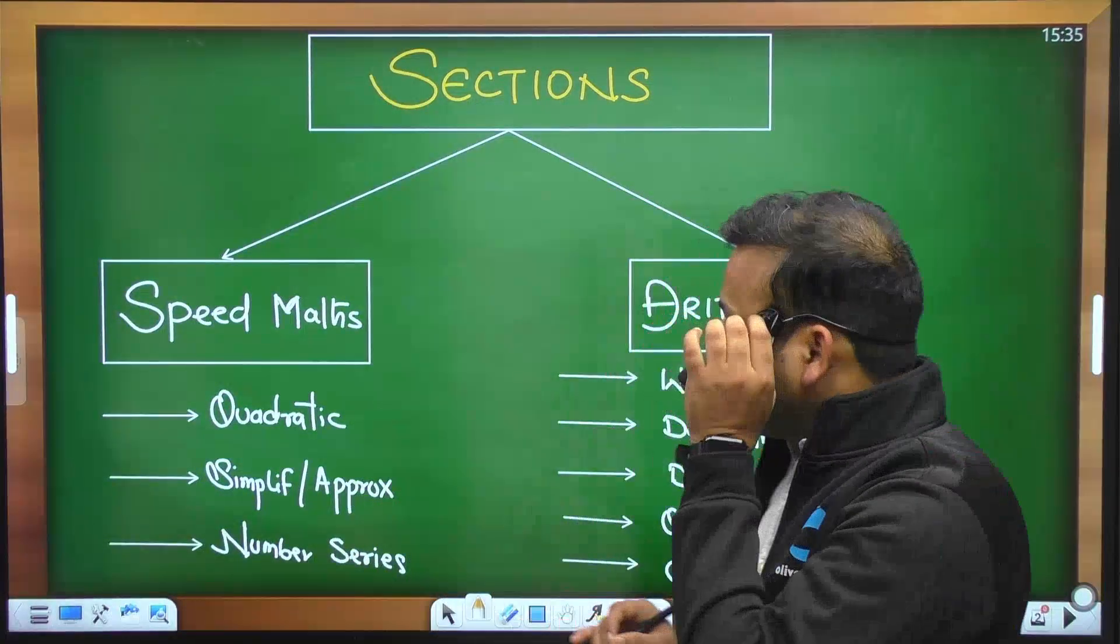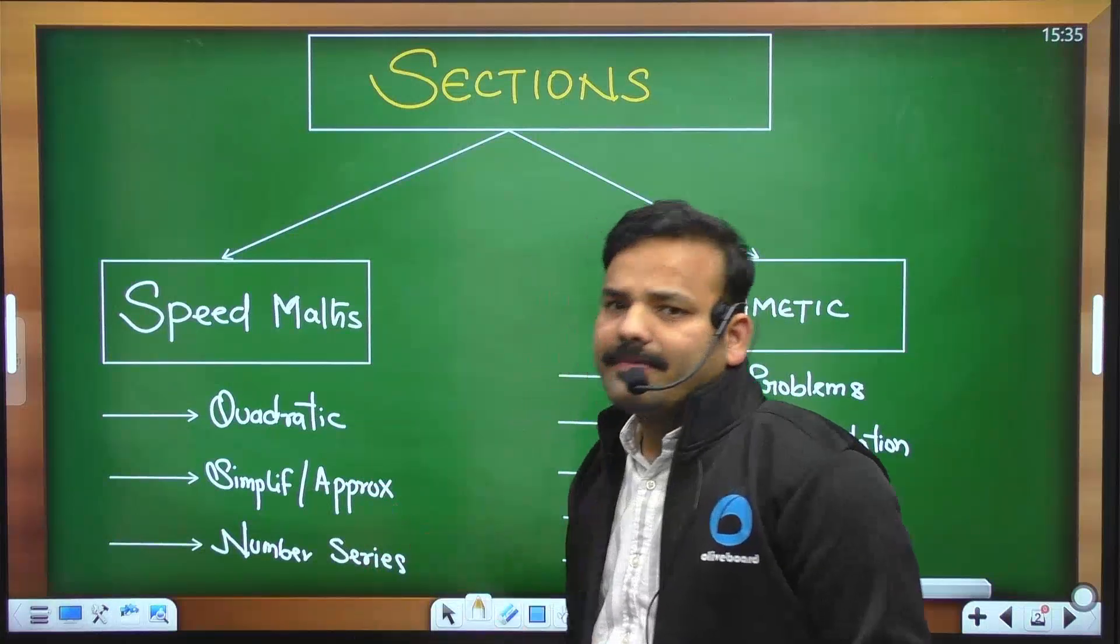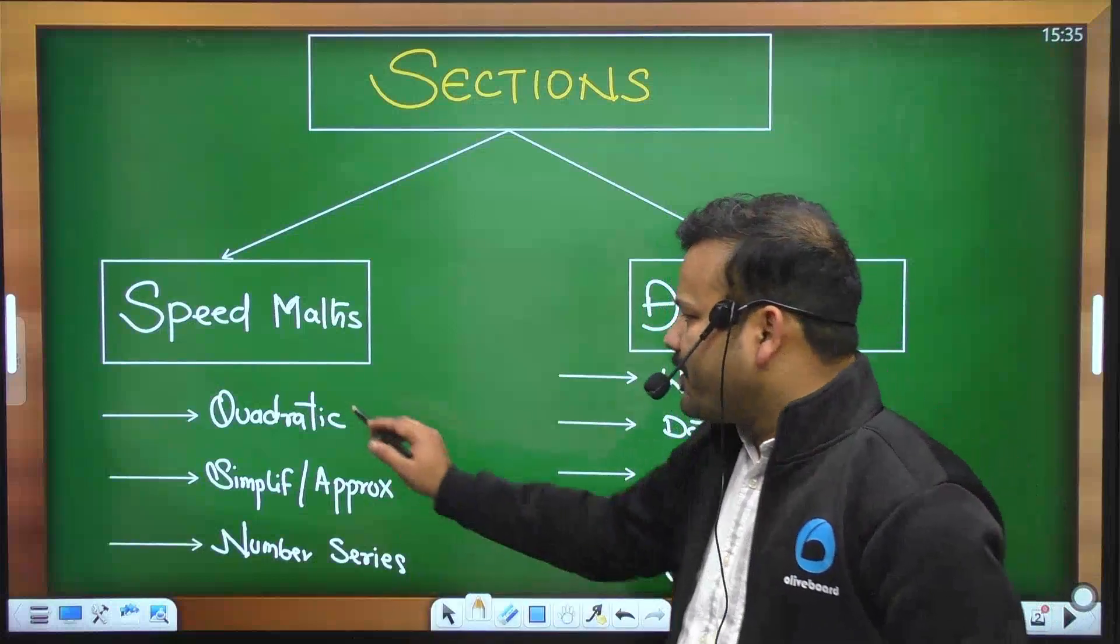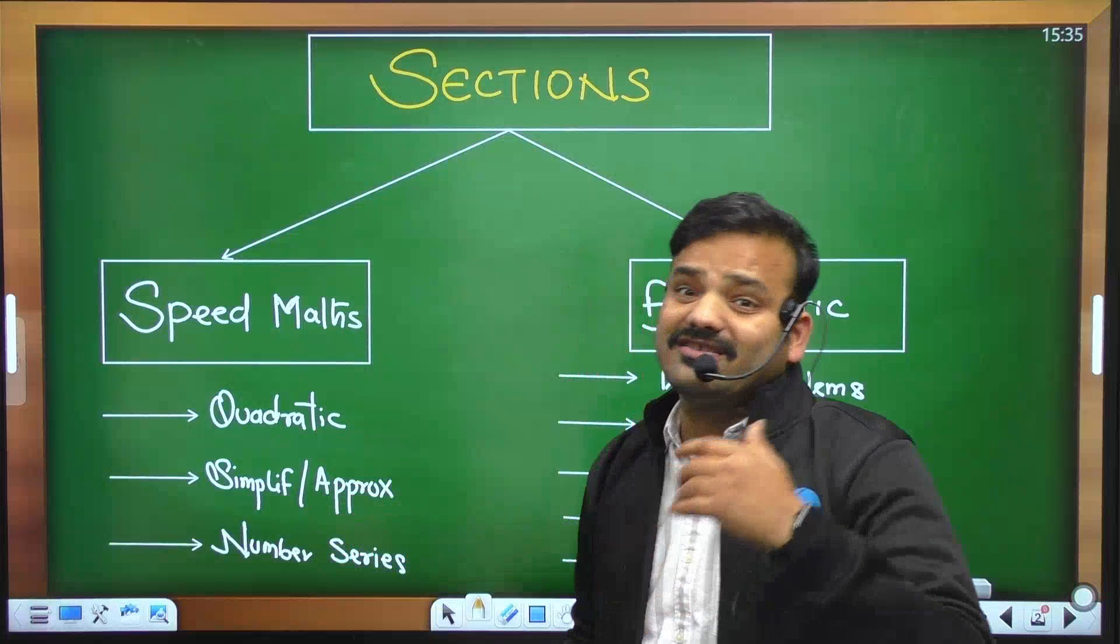Sabse pehle, speed maths ke jo section ho gaye, voh quadratic, simplification, aur number series ho gaye. Depending upon shift, yeh vary karta rehta hai marks. But hum on an average teeno ke 5-5 marks maan kar chal rahe hain ki 5 questions, 5 questions, 5 questions.